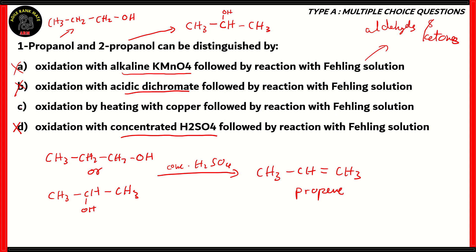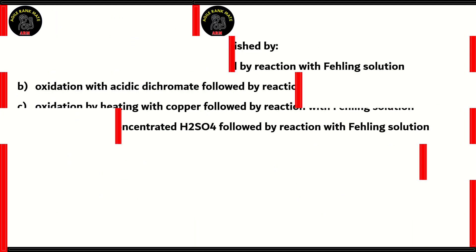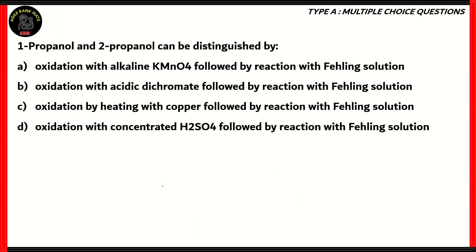So therefore, both A and B are incorrect, and we already proved that D is incorrect. That means C is the right option — oxidation by heating with copper, followed by reaction with Fehling's solution. That is the right option, and you can already prove that option C is correct.